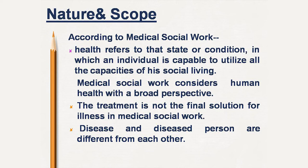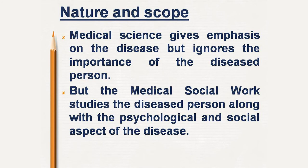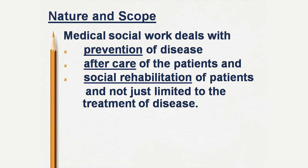Disease and the diseased person are different from each other. Medical science gives emphasis on the disease but ignores the importance of the diseased person. Medical social work, however, studies the diseased person along with the psychological and social aspects of the disease. Medical social work majorly deals with prevention of disease, aftercare of the patient, and social rehabilitation — not just the treatment of disease.